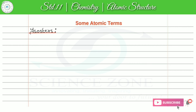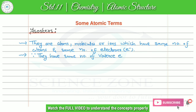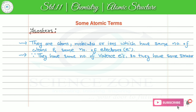To define isosteres: they are atoms, molecules, or ions which have same number of atoms and same number of electrons. Second point — since they have same number of valence electrons, they do have the same structure.